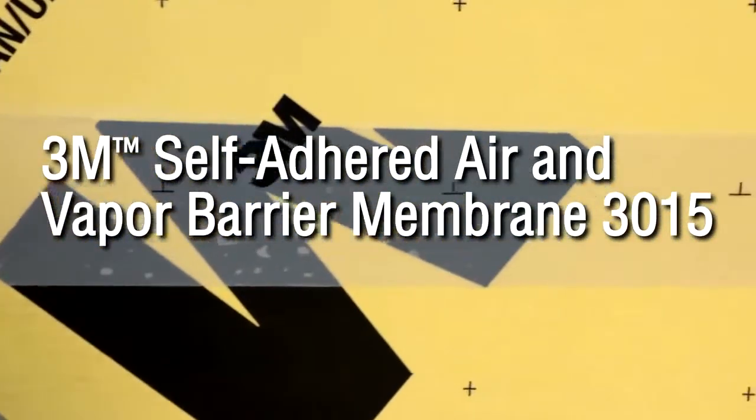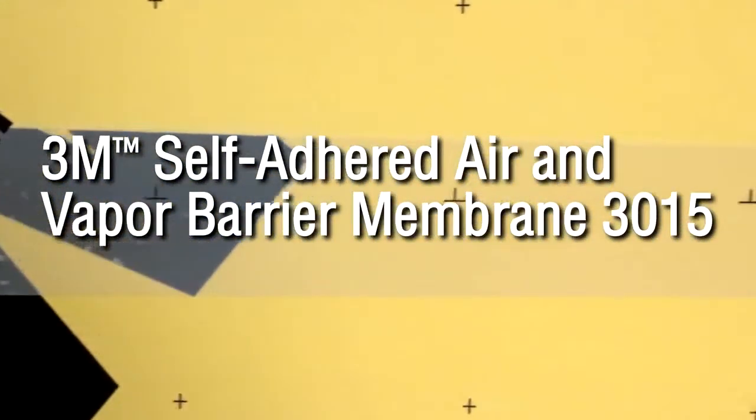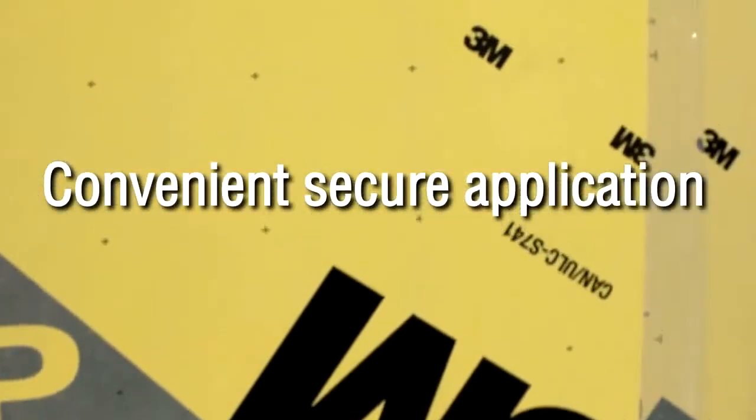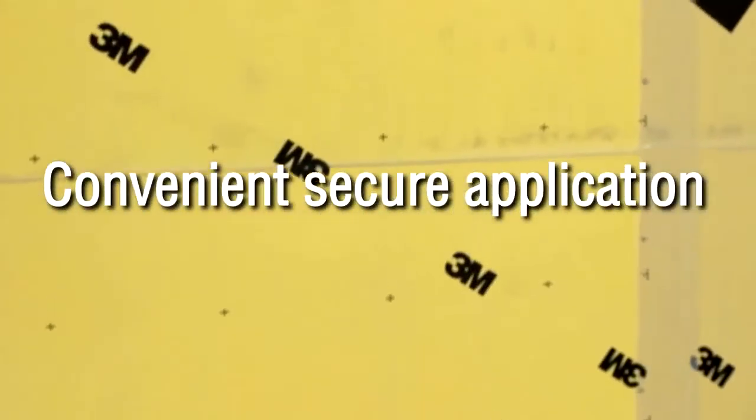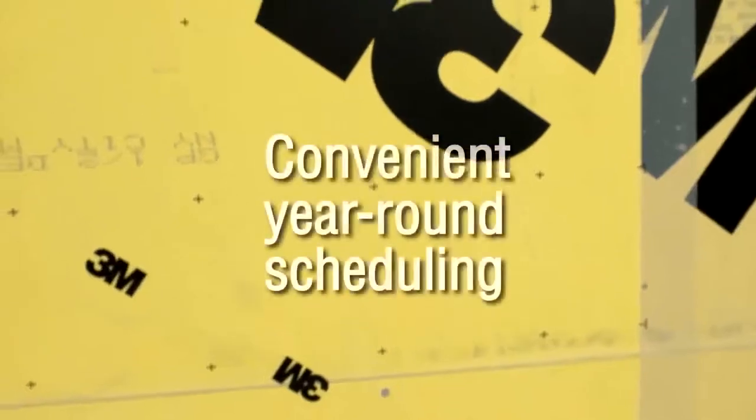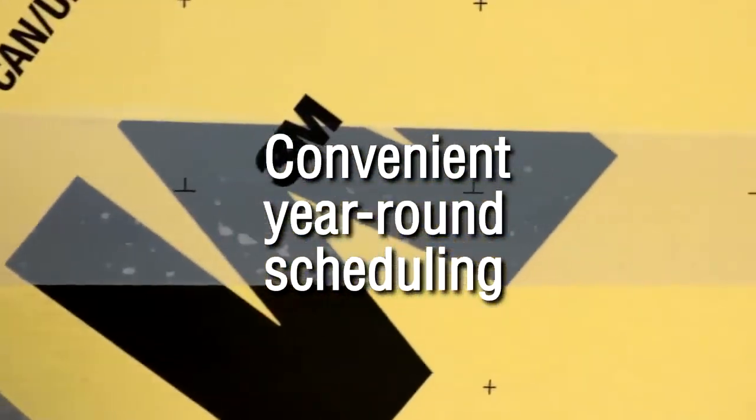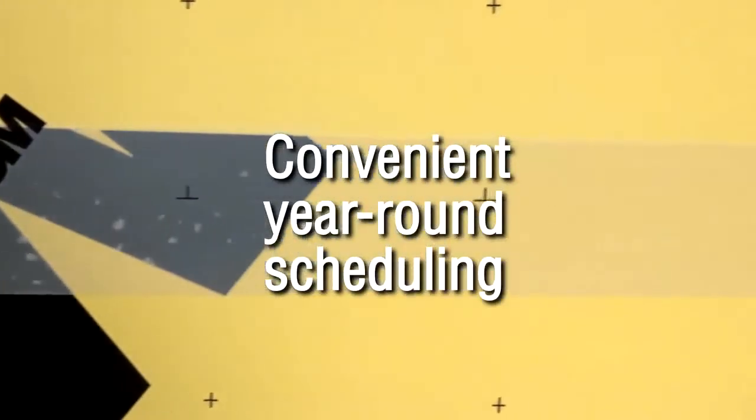There you have it! 3M Self-Adhered Air and Vapor Barrier Membrane 3015. Roll it on with the ease of a pressure-sensitive adhesive tape to sheathing, concrete, wood and other construction substrates, all without priming. Apply it in the summer without any adhesive melt issues and in the winter as low as 0 degrees Fahrenheit without heating.